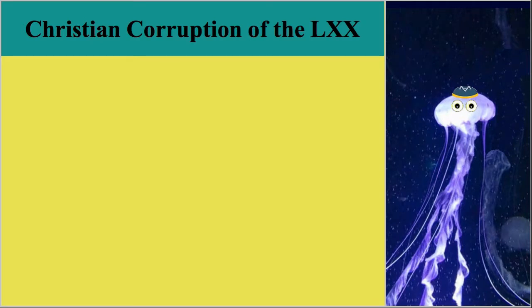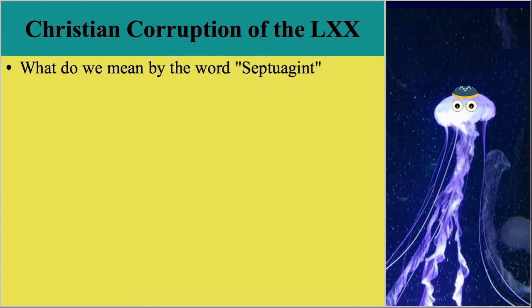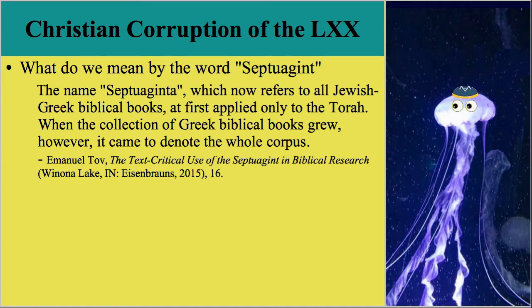Before we begin, I want to make a clarification that has caused some confusion at times. What do we mean by the word Septuagint? Instead of reinventing the wheel, I will quote Emmanuel Tov from his book, The Text-Critical Use of the Septuagint in Biblical Research, in which he says: the name Septuaginta, which now refers to all Jewish Greek biblical books, at first applied only to the Torah. When the collection of Greek biblical books grew, however, it came to denote the whole corpus. This is how I will be using the term throughout this video.